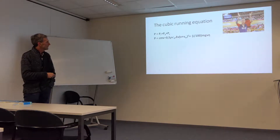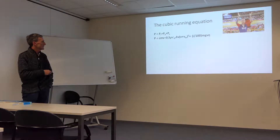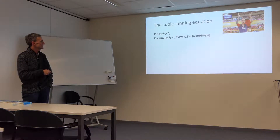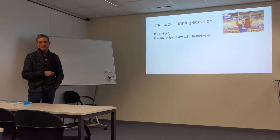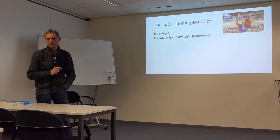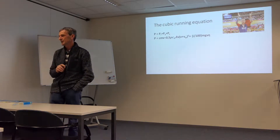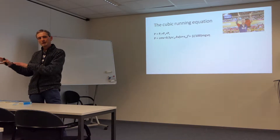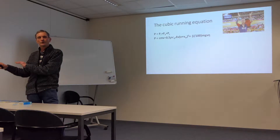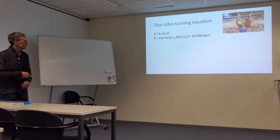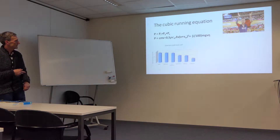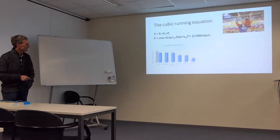The equation states that the total amount of power your body produces has to be used by these factors: the horizontal resistance, the air resistance, and the climbing resistance. If you know all those factors, you can calculate everything, even if you don't know the power of your human body — for example, in the case of Usain Bolt.